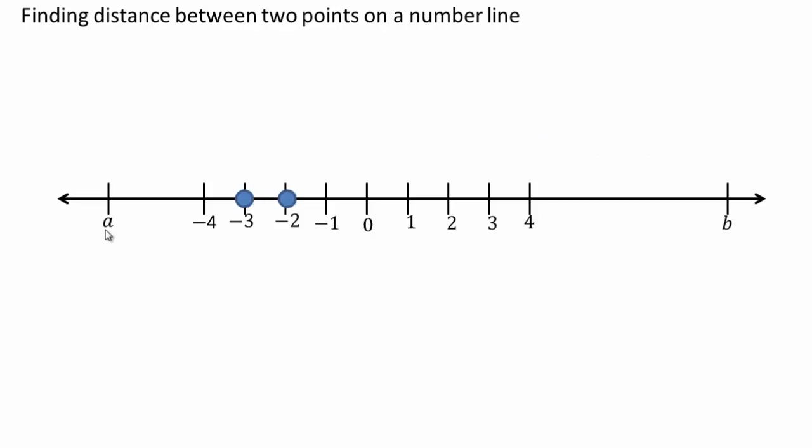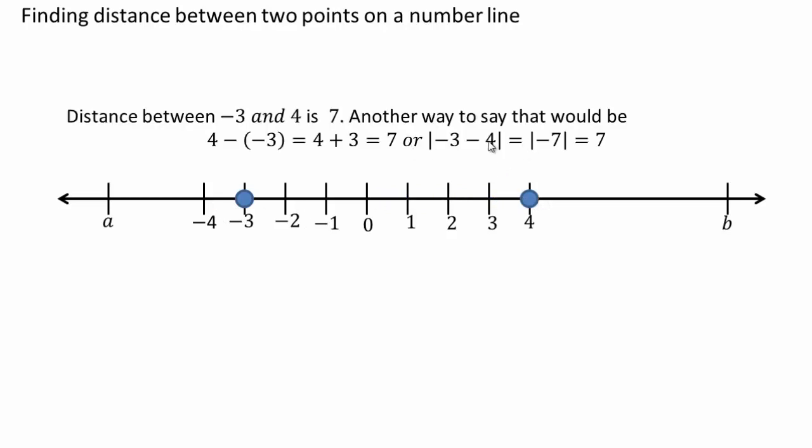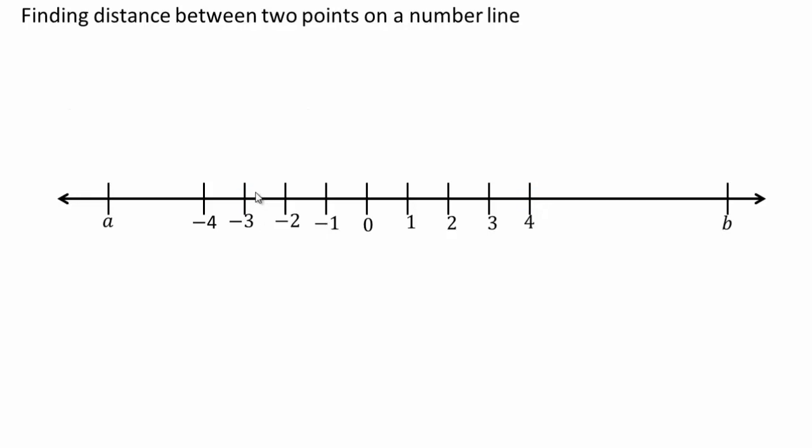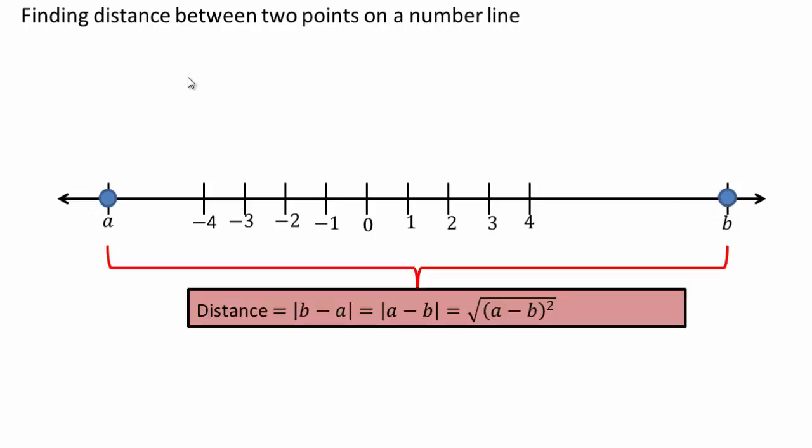What if you have a point negative three and a point four? The distance between them is seven. You can subtract the smaller number from the bigger number. Generically, if you have two points at a and b, you can do b minus a, or absolute value a minus b. Either way, it's going to turn out to be the same positive number, the distance between them.